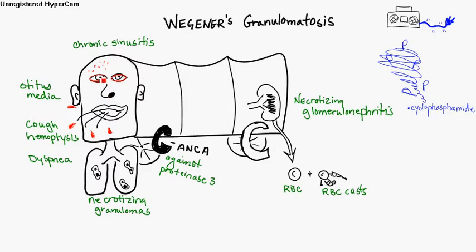You get redness of the conjunctiva, so you get a uveitis. You get rash, otitis media, cough with hemoptysis, and dyspnea. You've got problems with the lungs — you're coughing up blood and can't breathe very well.